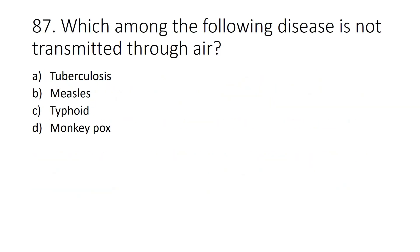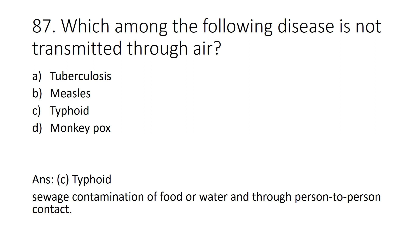Question number 87: Which among the following diseases is not transmitted through air? Option A: Tuberculosis, Option B: Measles, Option C: Typhoid, Option D: Monkeypox. Answer: Option C, Typhoid. Typhoid is transmitted through sewage, contamination of food or water, and through person-to-person contact — not through air.